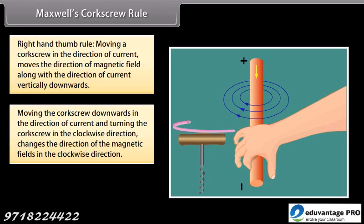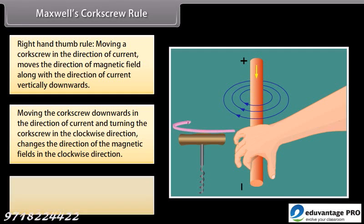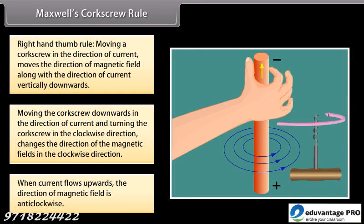So when current flows upwards, the direction of magnetic field changes and is anti-clockwise.